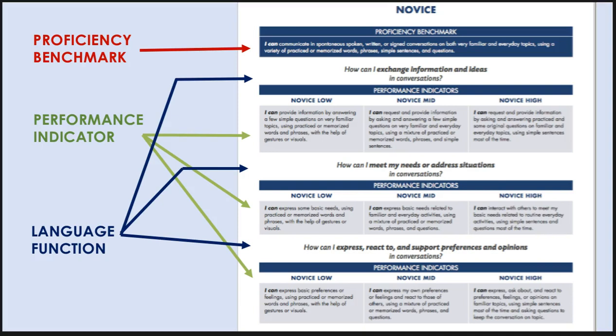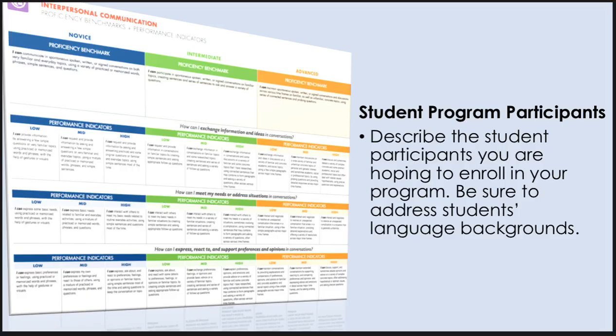The performance indicators describe what a learner can do based on instruction and practice. Let's look more closely at how this document is used when writing the proposal. The proposal must describe who the student program participants will be. Look closely at the benchmarks and performance indicators for the interpersonal and presentational modes to determine the correct proficiency benchmark — novice, intermediate, or advanced — and then the correct performance indicator for each group of students your program will enroll.